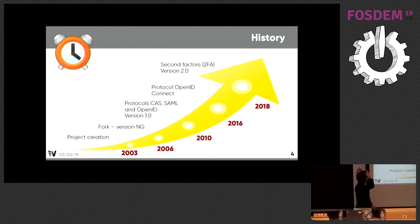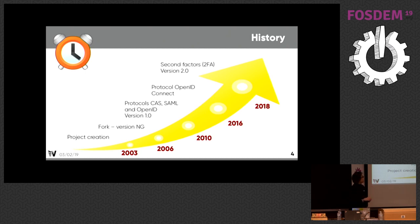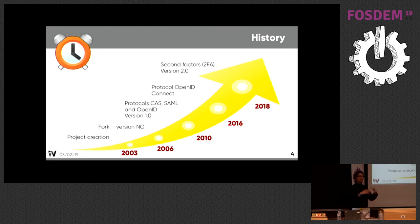Some history: it's a very old software. It was built in France and is now used in other countries of course. The fork was done with the NG version, which stands for 'new generation' — but also 'Gendarmerie Nationale' in France, so the same letters. It's very widely used in administration in France, but also in private companies. We implement a lot of protocols, and the last one was OpenID Connect. We released the 2.0 version last year with the second factor authentication feature.